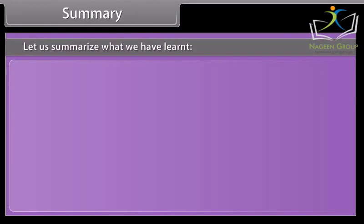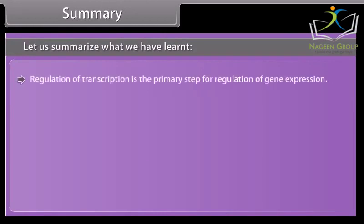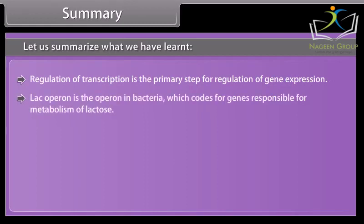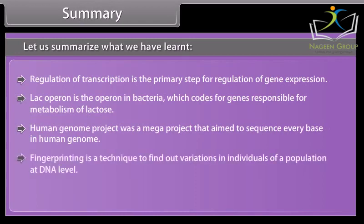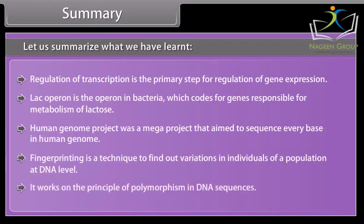Let us summarize what we have learned. Regulation of transcription is the primary step for regulation of gene expression. The lac operon is the operon in bacteria which codes for genes responsible for metabolism of lactose. The Human Genome Project was a mega project that aimed to sequence every base in the human genome. DNA fingerprinting is a technique to find out variations in individuals of a population at the DNA level, and it works on the principle of polymorphism in DNA sequences.